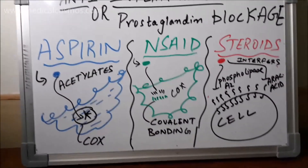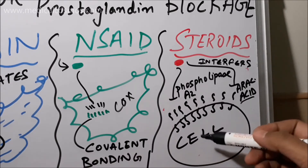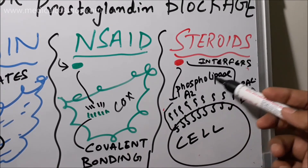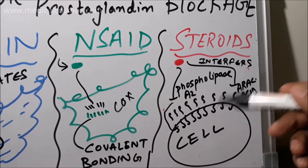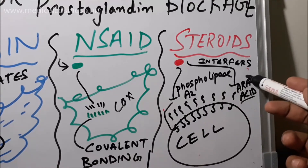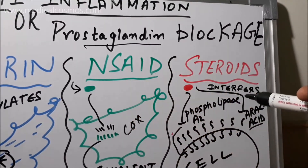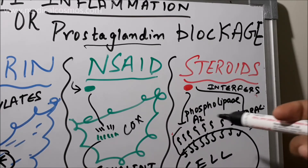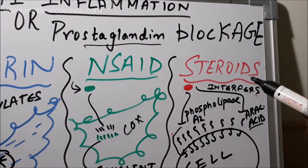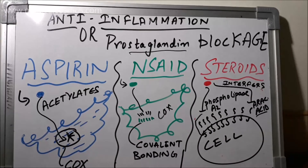Thirdly, steroids interfere with the production of arachidonic acid. Here we can see the cell and the phospholipid bilayer membrane, where phospholipase A2 is found. Phospholipase A2 normally liberates arachidonic acid through an enzymatic cascade. Steroids block phospholipase A2, thereby blocking the arachidonic acid pathway, which ultimately prevents prostaglandin production — thereby stabilizing the inflammatory mediator. So steroids block the enzymatic precursor, phospholipase A2, meaning no liberation of arachidonic acid takes place.